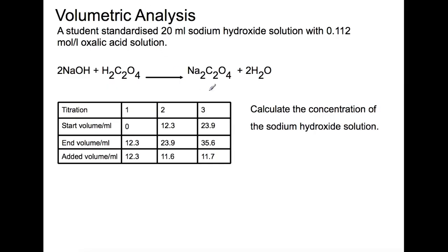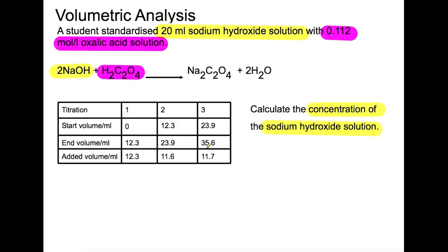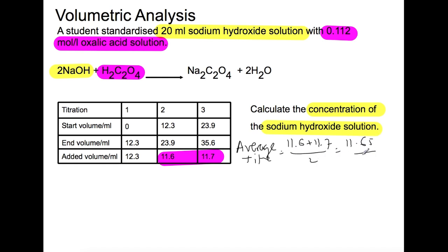The final type of calculation we're looking at is volumetric analysis — titration calculations. Here a student is standardizing 20 mL of sodium hydroxide solution, finding its concentration using 0.112 mol per litre oxalic acid solution. The first step is to work out the average titre of oxalic acid used. We take 11.6 and 11.7 and divide by two, then divide by 1000 before using it. The next step is to work out the moles of oxalic acid using concentration times volume: concentration is 0.112 and volume is the average titre.